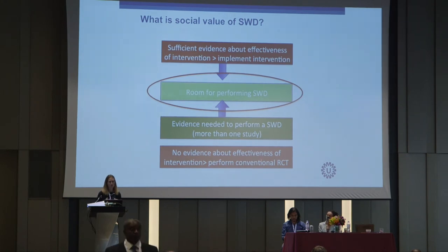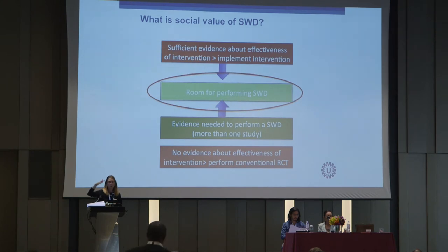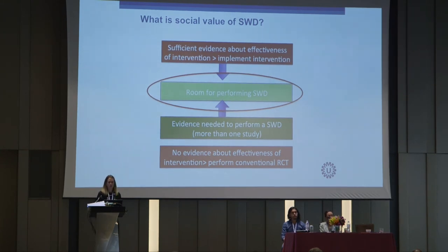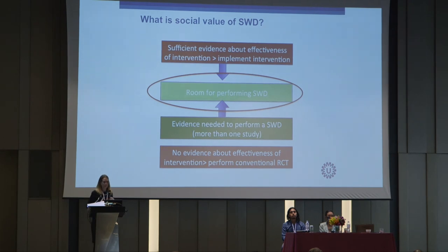Related to that is the social value of stepped wedge designs. You can have no evidence whatsoever about the effectiveness of an intervention — then typically statisticians will say you have to perform a conventional RCT — or you can have sufficient evidence about the effectiveness and simply implement the intervention. But typically for an SWD to start, more evidence is needed, and you also need more evidence to study the effectiveness of the intervention. So the room for stepped wedge designs is between having sufficient evidence and having some evidence, and the discussion is to what extent the stepped wedge trial design is justified and has sufficient social value.